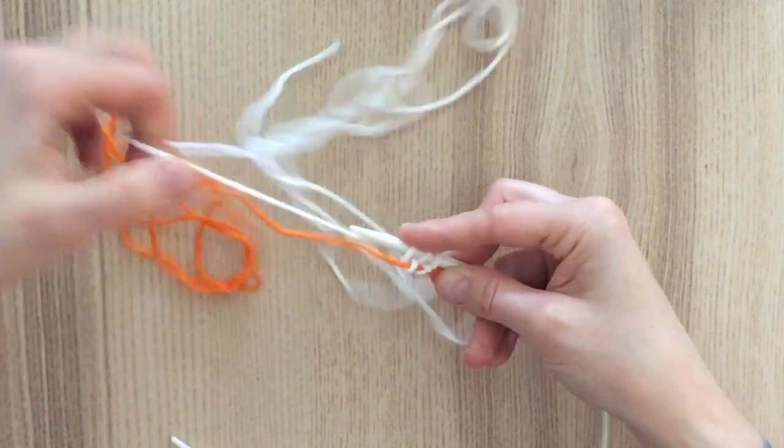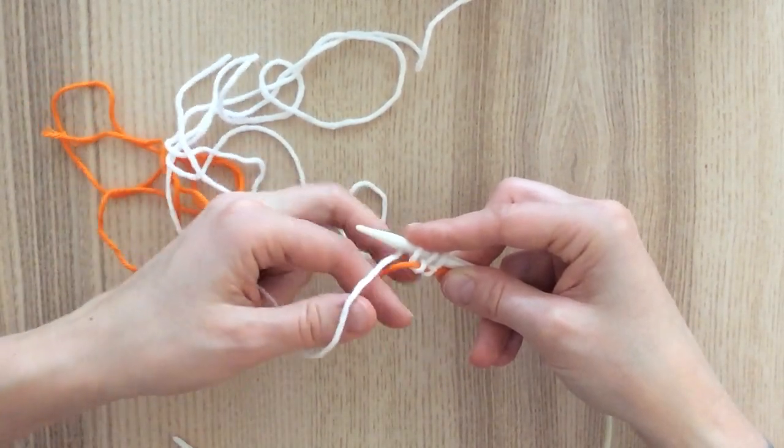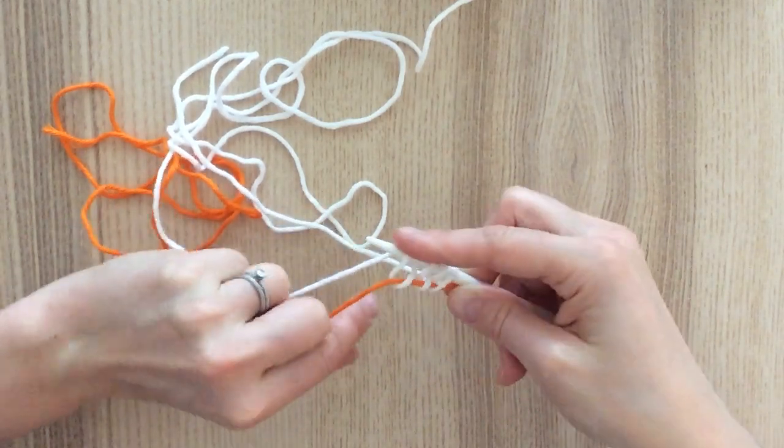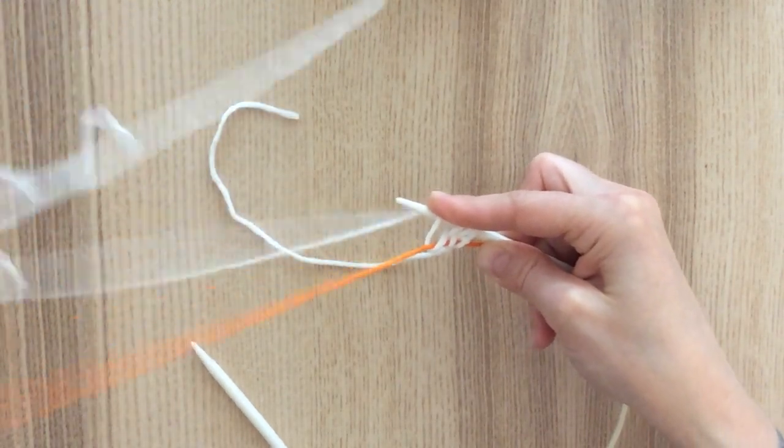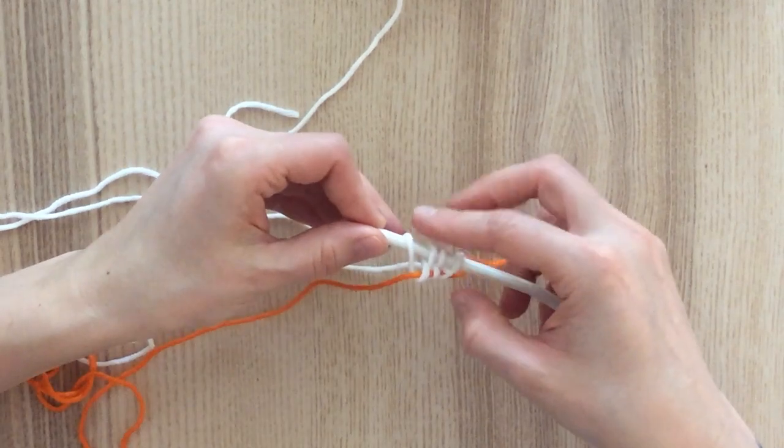Again, take your working yarn, put it over your scrap yarn, around it, and then over your needle to create the stitch. And then sometimes you may have to get them untangled a little bit because the two ends will get a little funny.